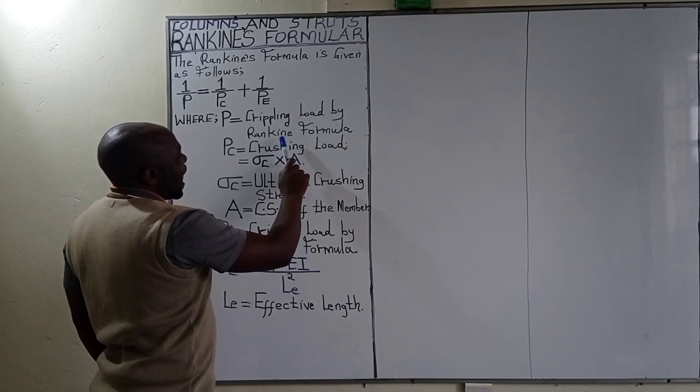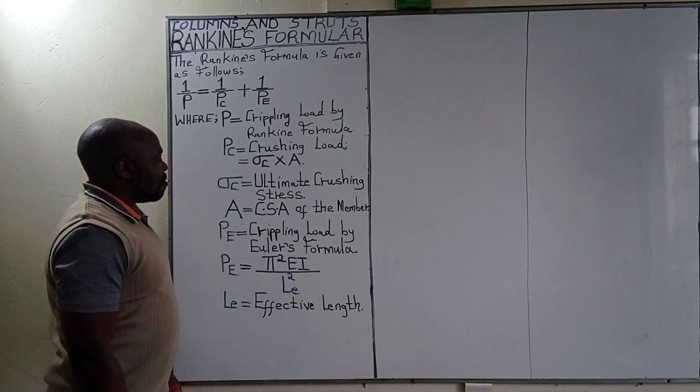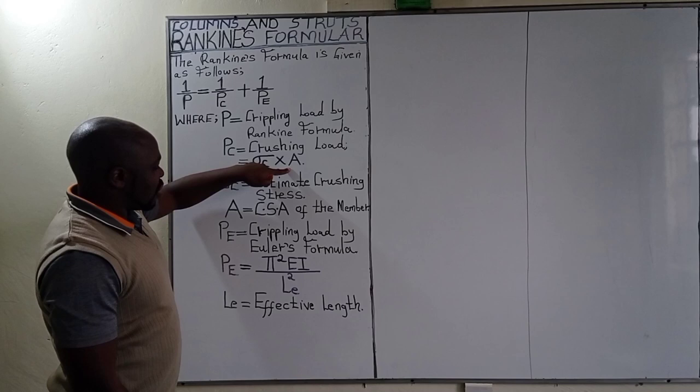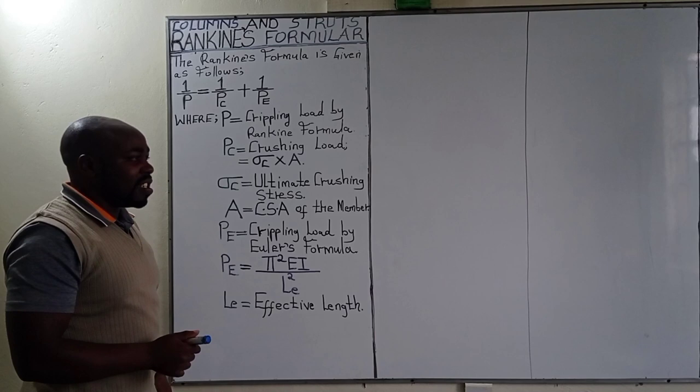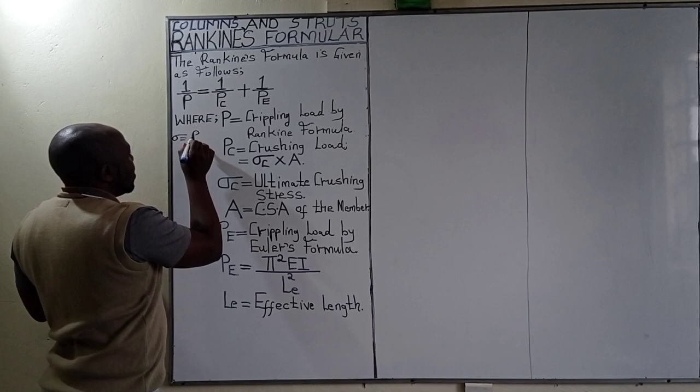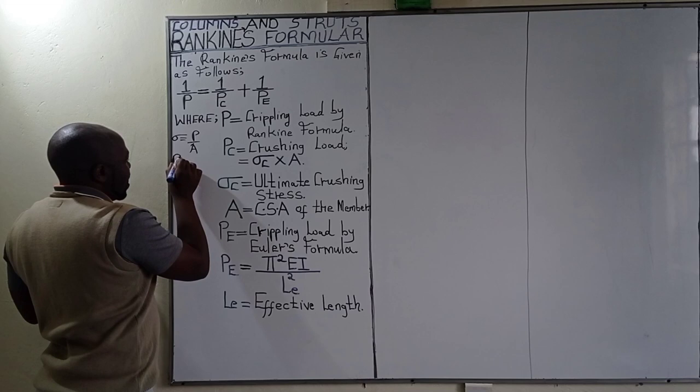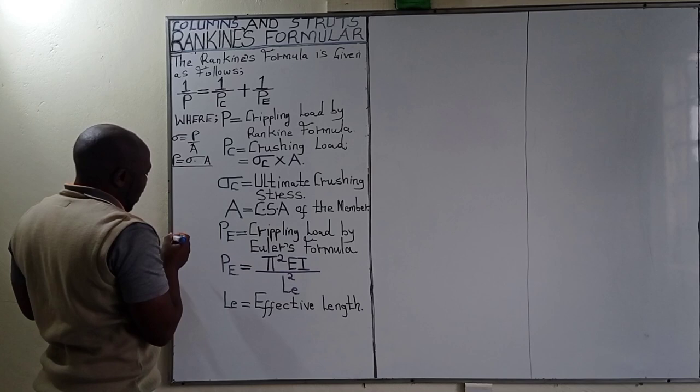Pc is the crushing load, given by the ultimate crushing stress multiplied by the cross-sectional area of the member. This crushing load comes from simple stresses and strengths, where stress equals load divided by cross-sectional area. Making load the subject gives stress multiplied by cross-sectional area, which is what we have here.